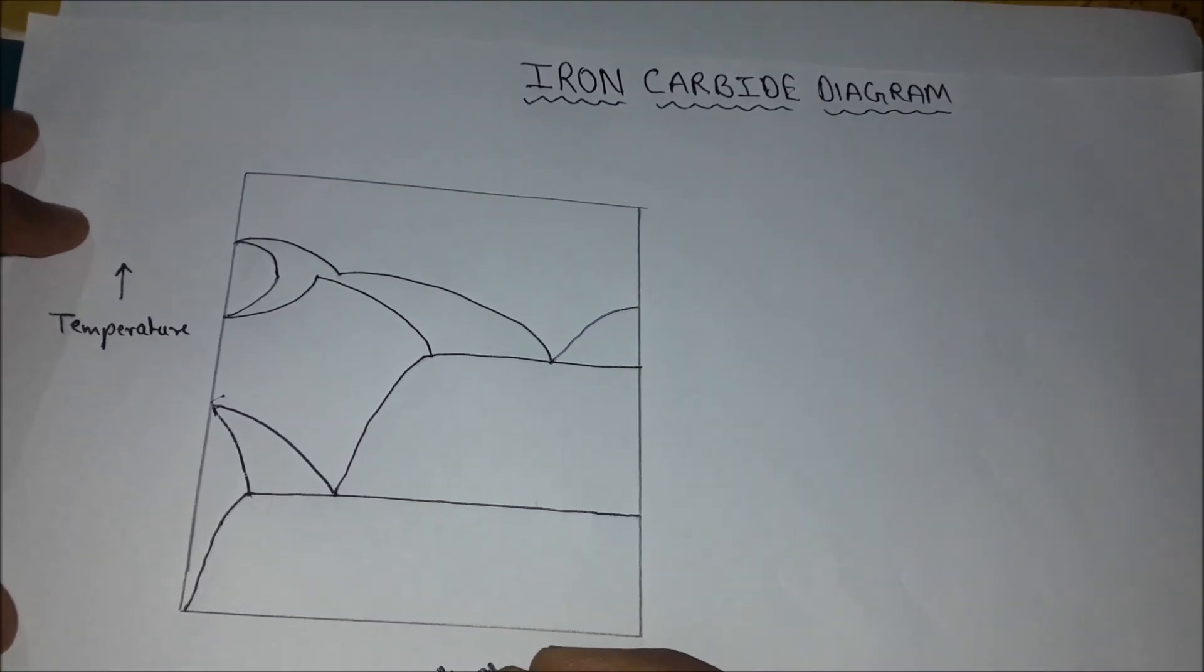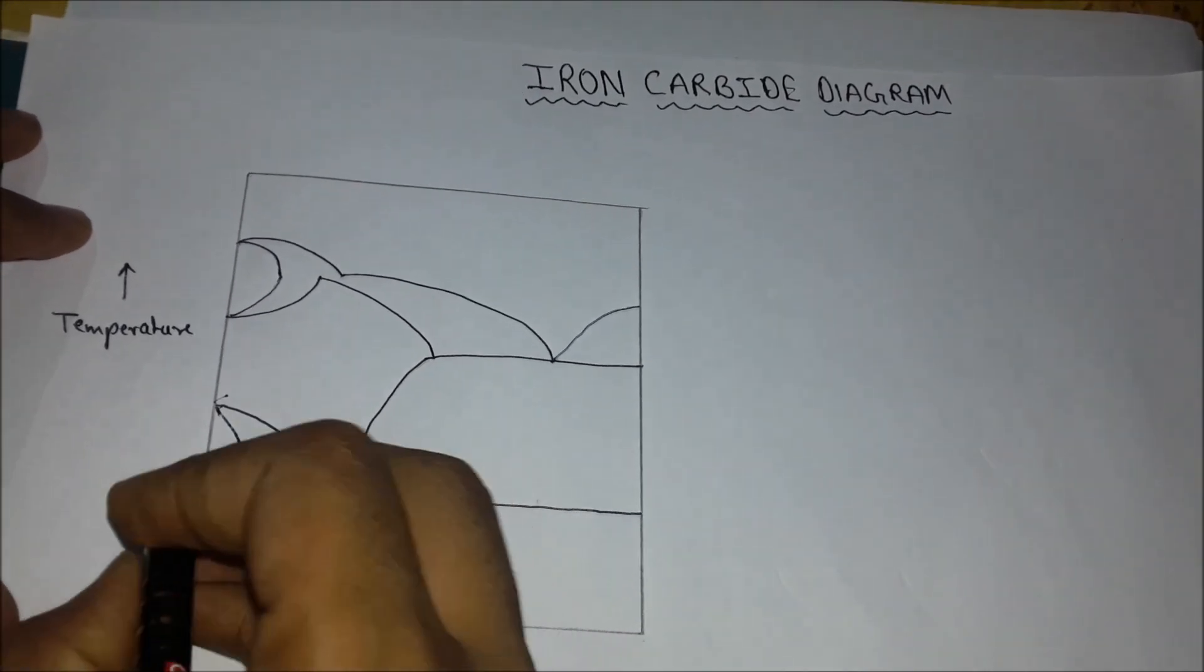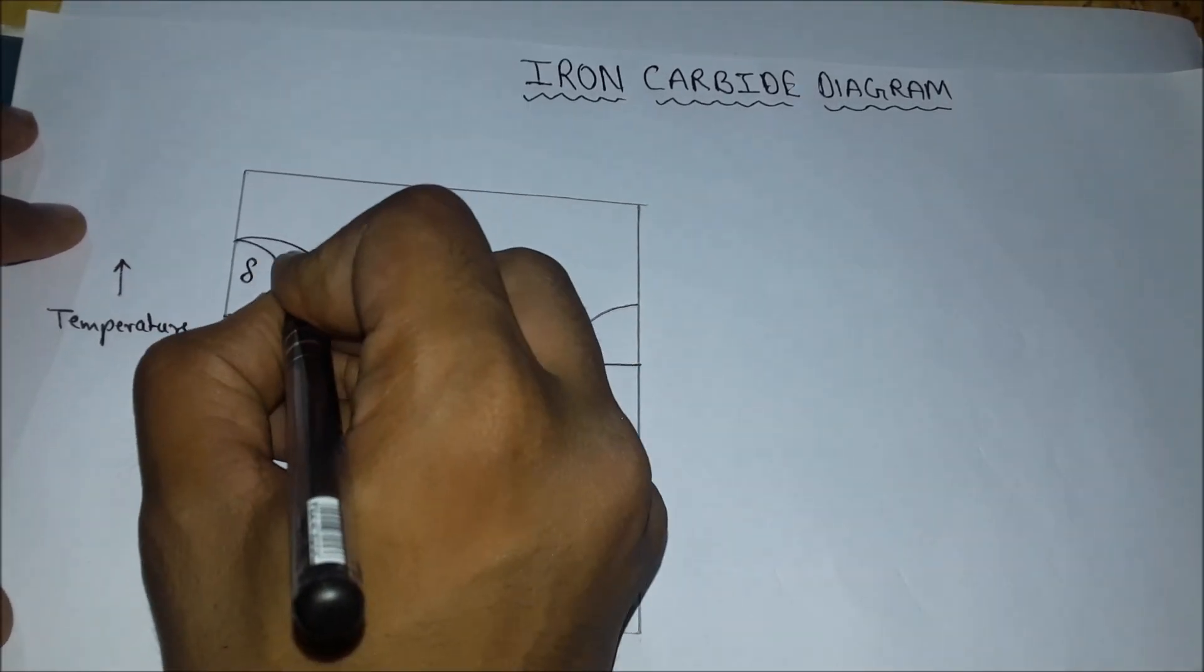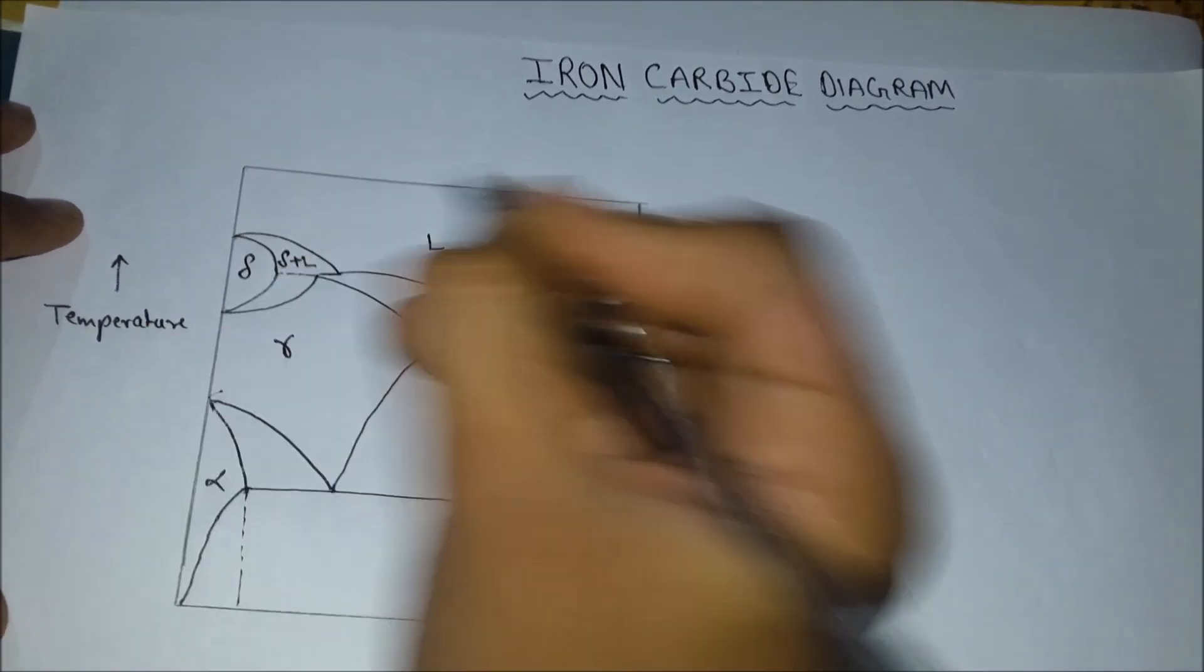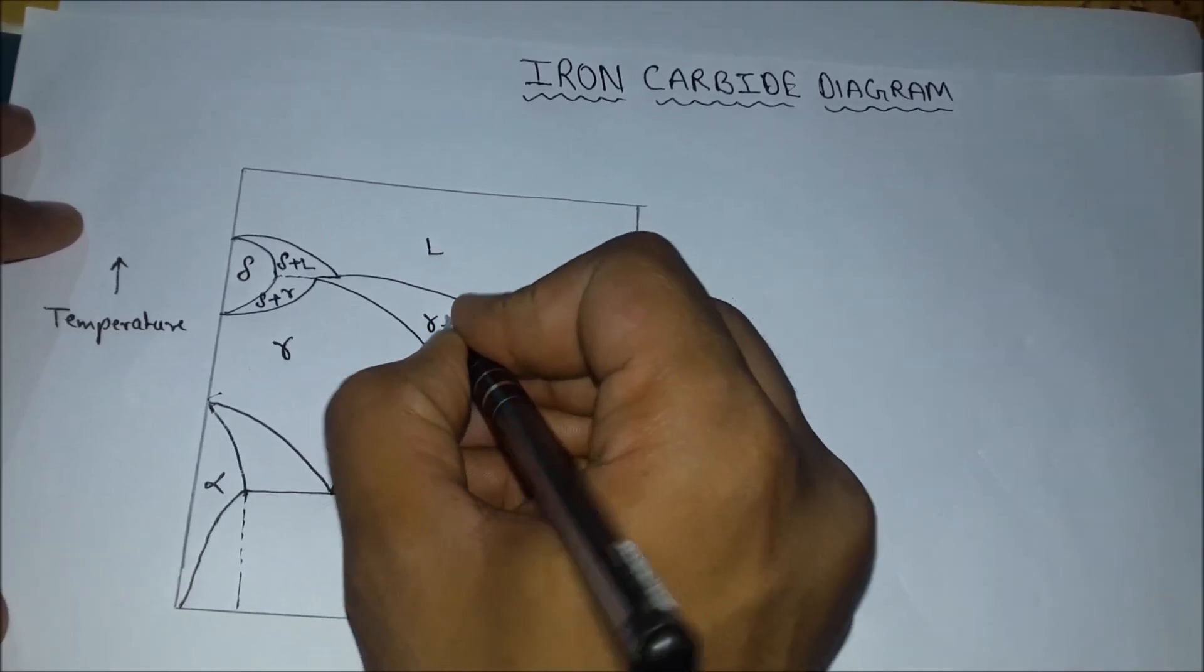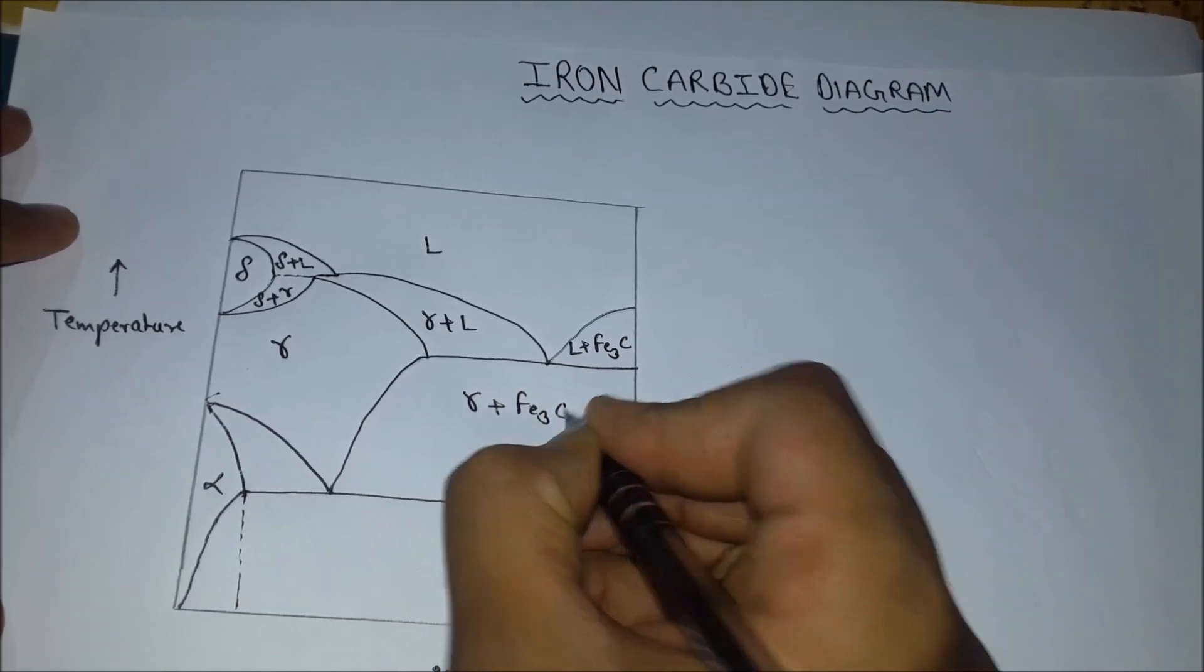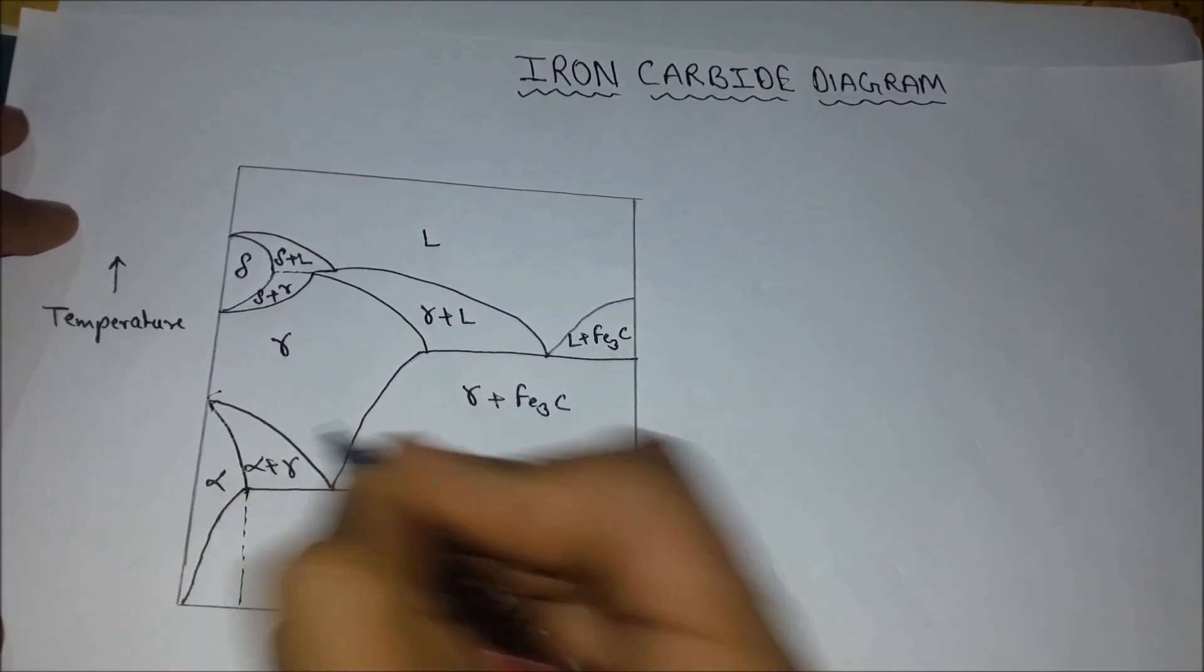Now we will write the percentage of carbon in different phases. This is Alpha Phase, this is Gamma Phase Austenite, this is Delta Phase, and this is Liquid Phase. This is Delta plus Liquid. This is austenite plus cementite, so called ledeburite. This is ferrite plus austenite.